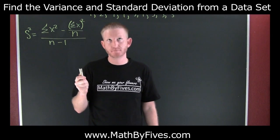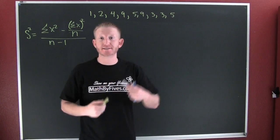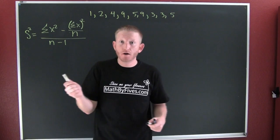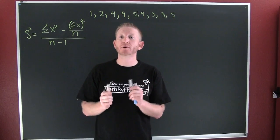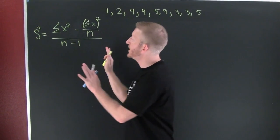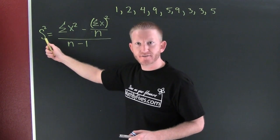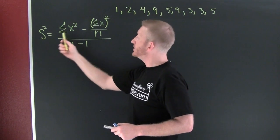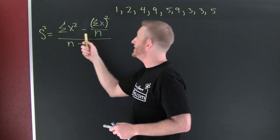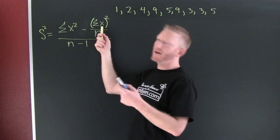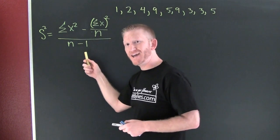Now there's lots of different variance formulas from a data set, a sample, if you will, and all of them are algebraically equivalent. The one I want to work with is this one right over here. Here you see the variance, yes, which is the standard deviation squared. It's going to be the sum of the x's squared minus the sum of the x's squared divided by n, divided by n minus 1.